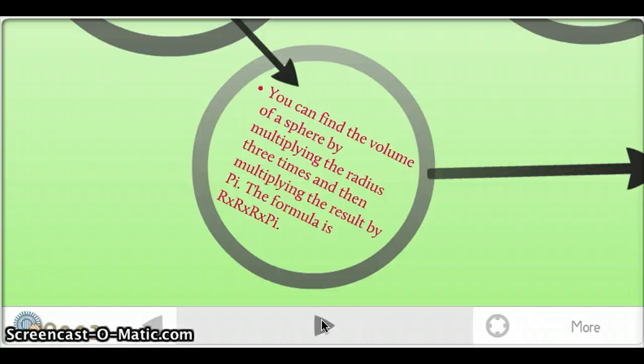You can find the volume of a sphere by multiplying the radius three times, then multiplying the result by pi.